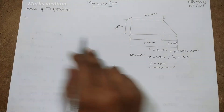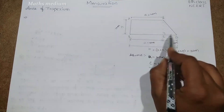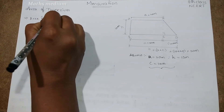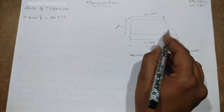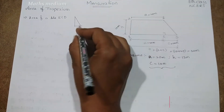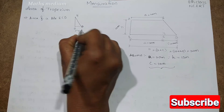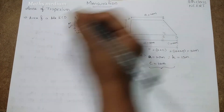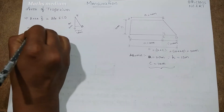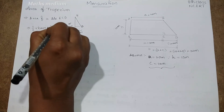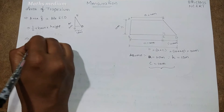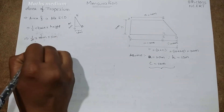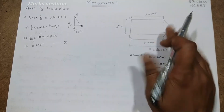Apart from the full trapezium, we have one rectangle and one triangle. First, let's find the area of triangle ECD. This triangle has a base of 10 meters and height of 12 meters. Area of a triangle = half × base × height = half × 10 × 12 = 60 square meters.